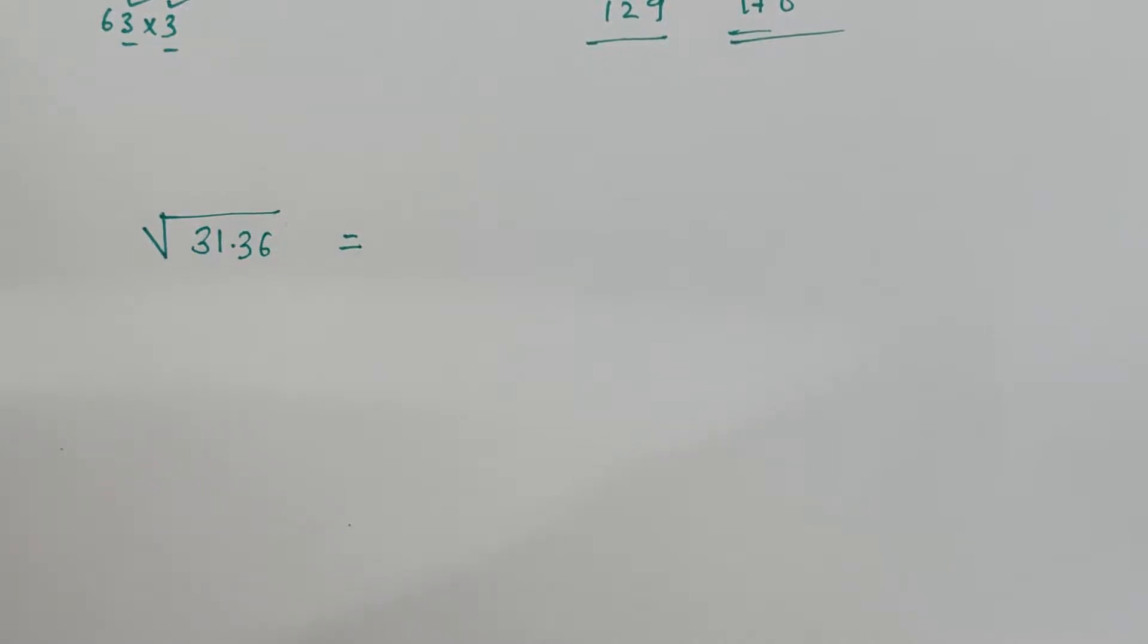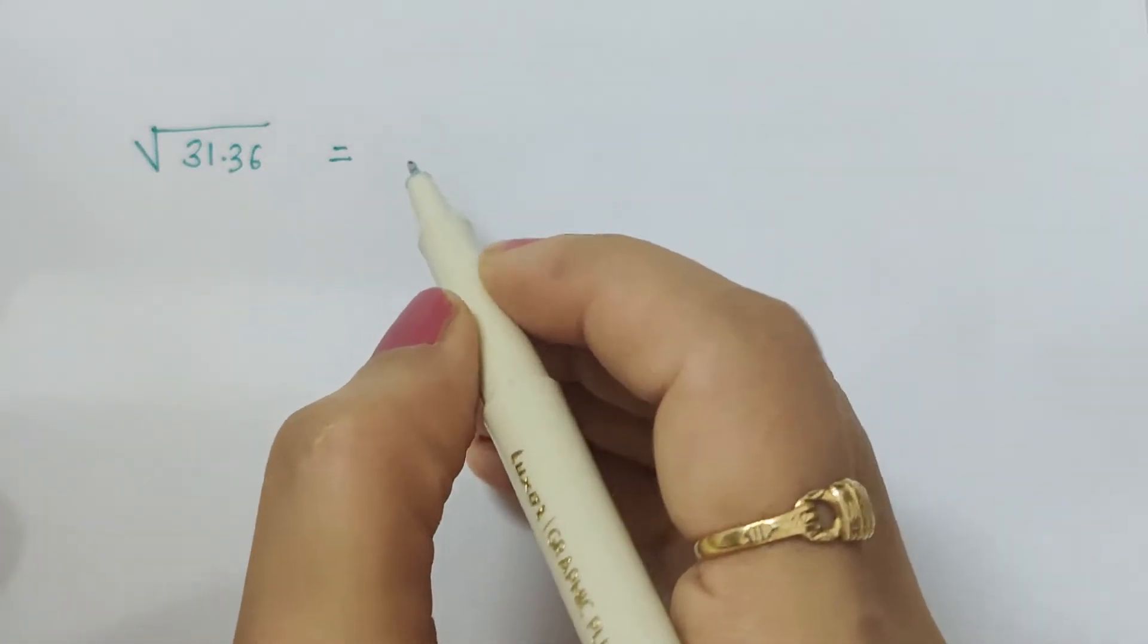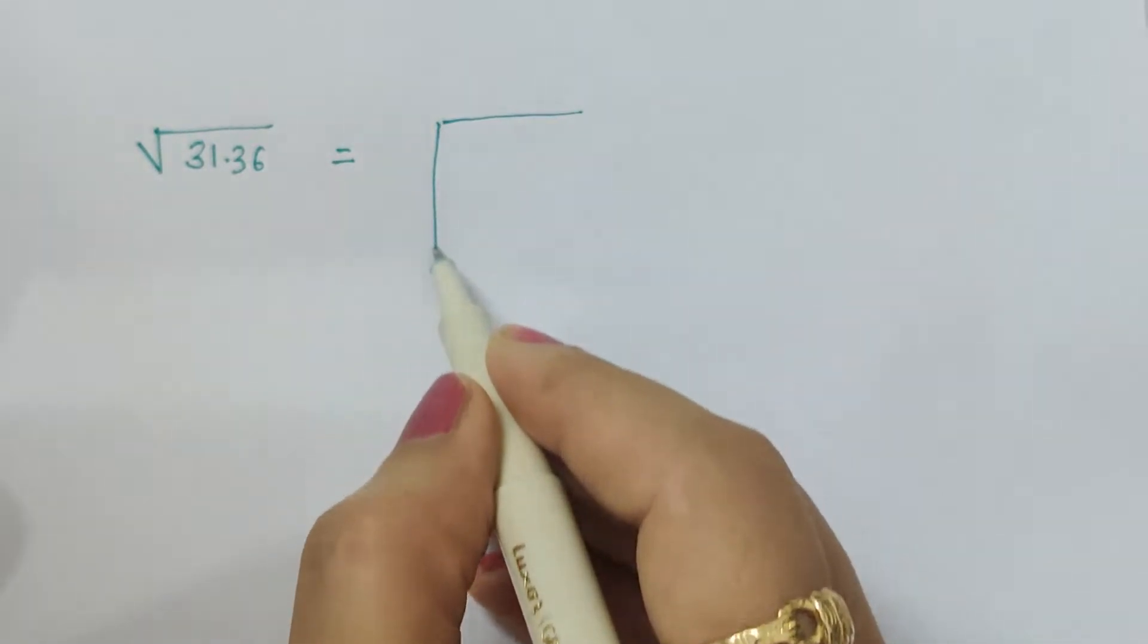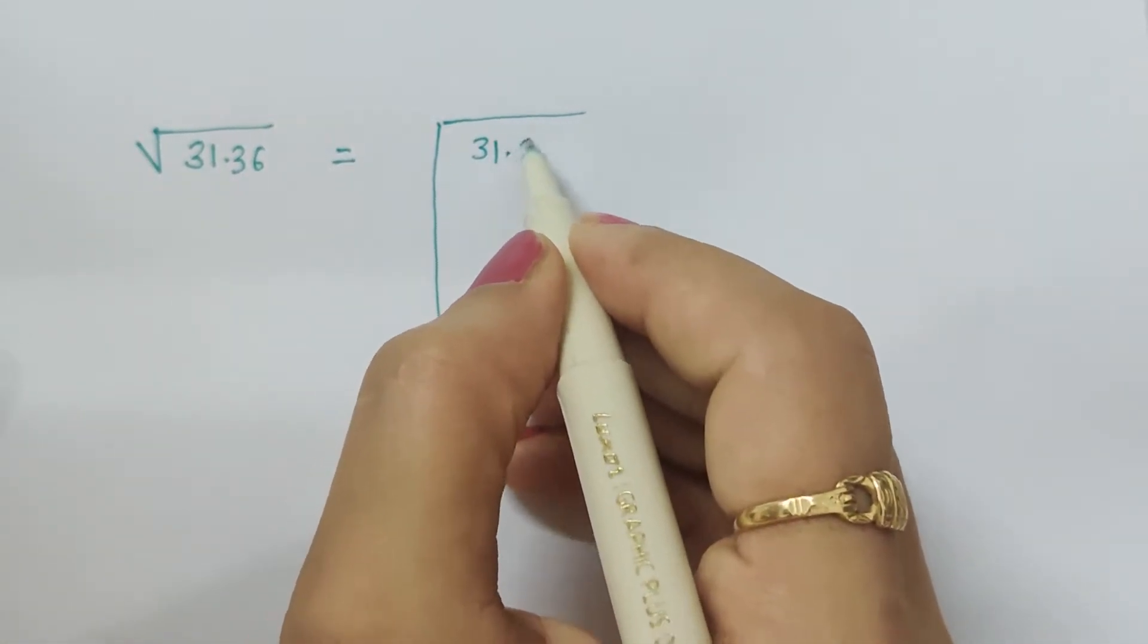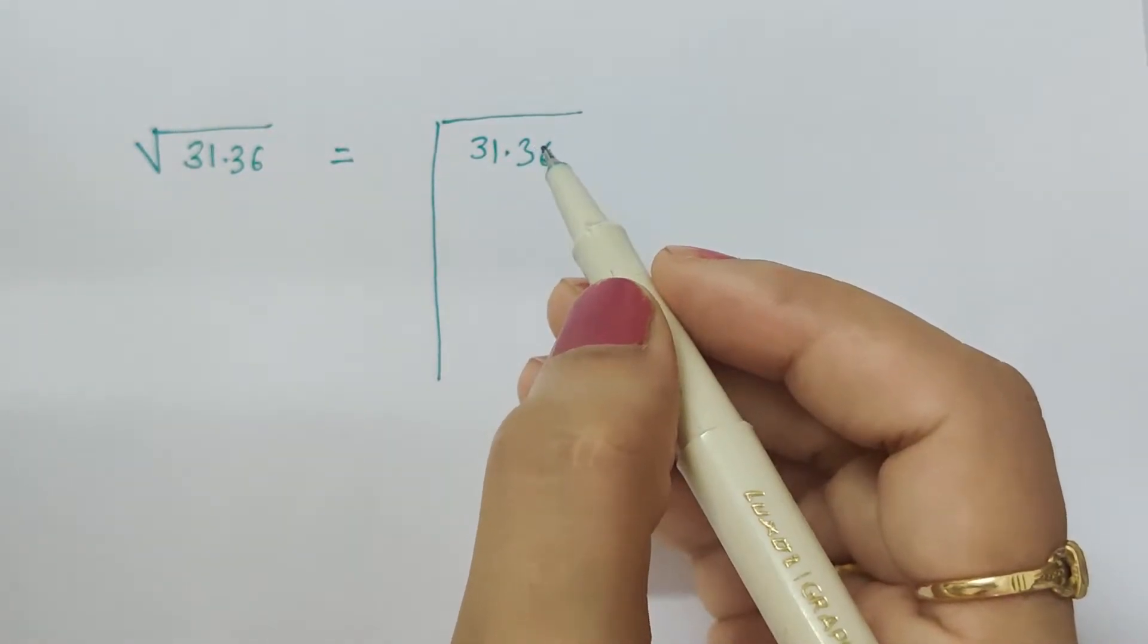Hello friends, now let's find the square root of a decimal number. In my previous video I showed how to find the square root of even digit numbers and odd digit numbers. Here we are finding the square root of a decimal number.